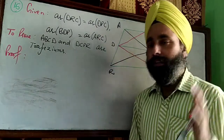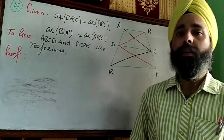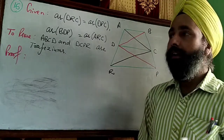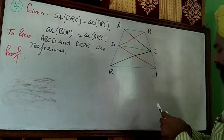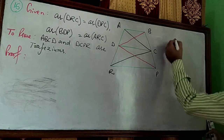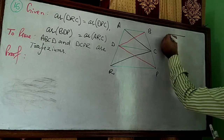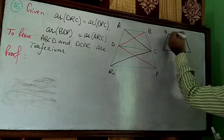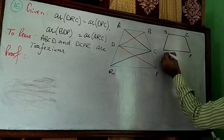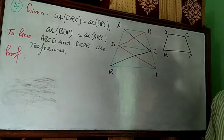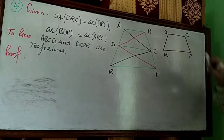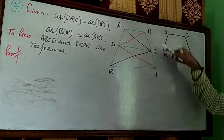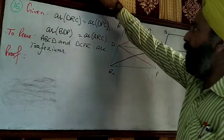This thing should be very clear: if in a quadrilateral one pair of opposite sides is parallel, then we can say that the quadrilateral is a trapezium. For example, quadrilateral DCPR — this one is a trapezium.